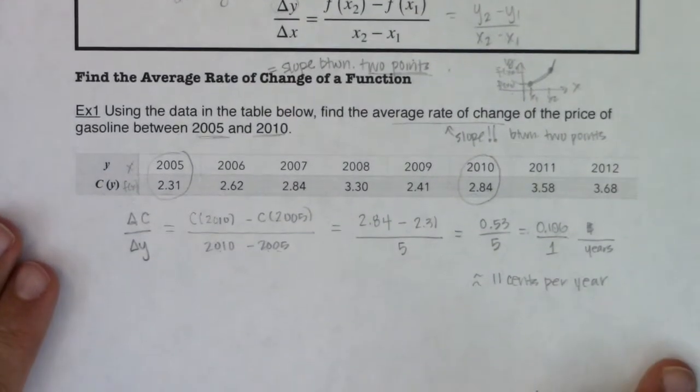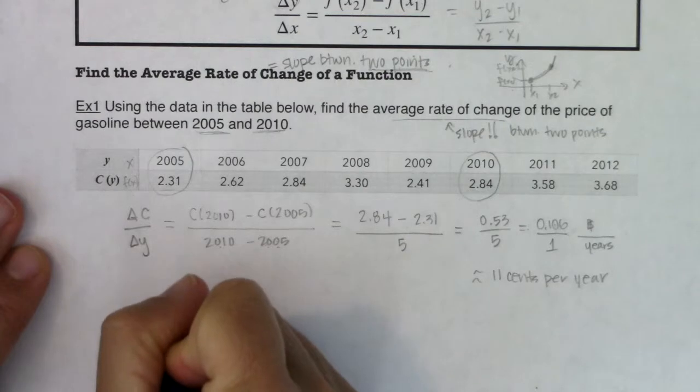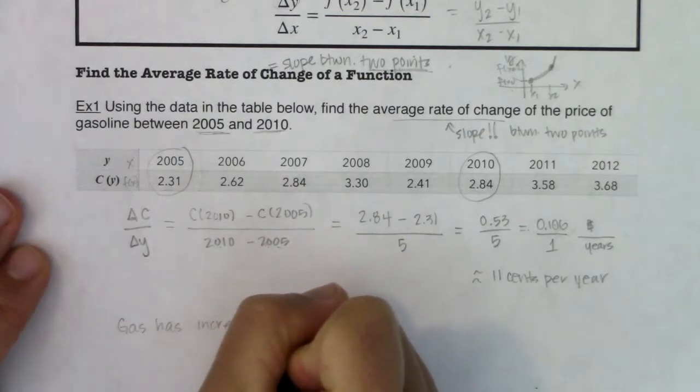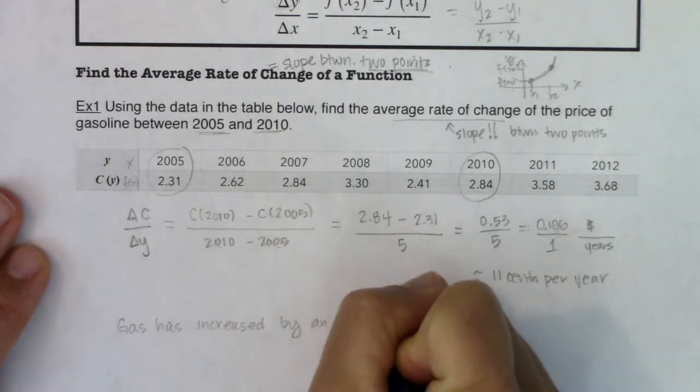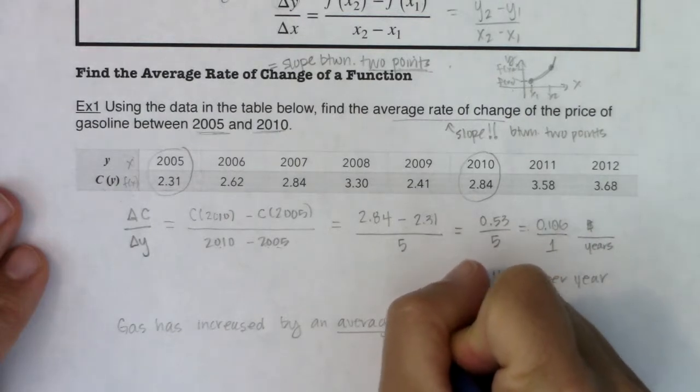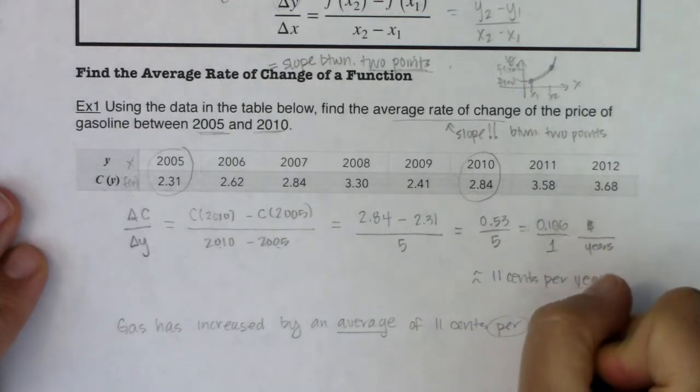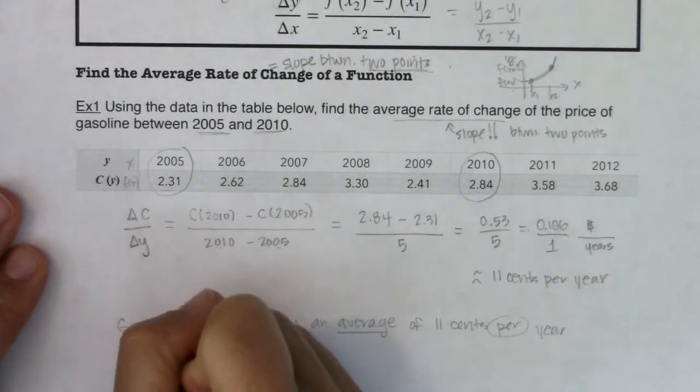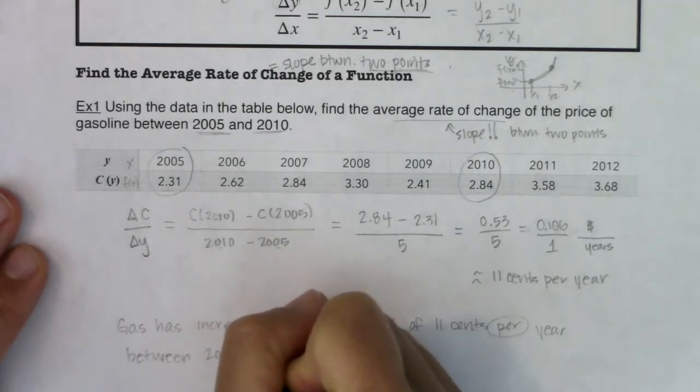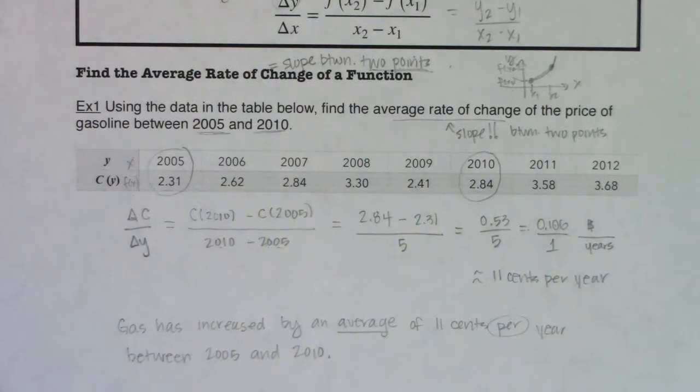And I want to practice writing this as a sentence. Because especially when we get into the statistics side of this class, we're going to be writing out a bunch of sentences. So I would say gas has increased by an average of 11 cents per year between 2005 and 2010. That's all I got. That's my slope. And we will be interpreting slopes as we move forward, especially when we get to chapter four.